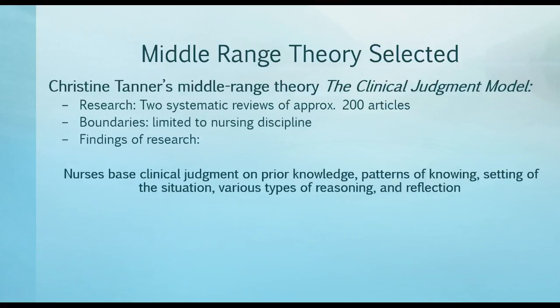The middle range theory selected for the scholarly project to be completed throughout the DNP program is Christine Tanner's middle range theory, the clinical judgment model. This model was based on two systematic reviews of approximately 200 combined articles examining the process by which nurses make clinical judgments. This clinical judgment model was published in 2006. The theory possesses boundaries for use within the nursing discipline alone and cannot be transferred to other disciplines without further research.